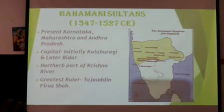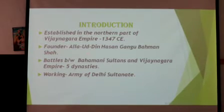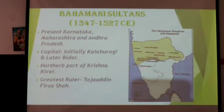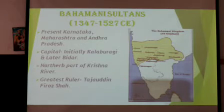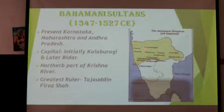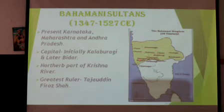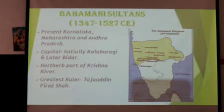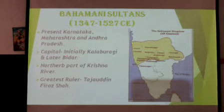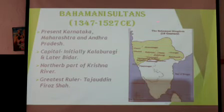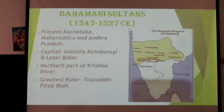As mentioned, the sultanate was established in the northern part of the Vijayanagara Empire. You can see on the map the Vijayanagara Empire, while the Bahamani kingdom belongs to the northern part — the region marked in yellow. During the 15th century, places such as Kalyana, Ahmednagar, Bidar, Kalaburagi, Kundapalli, and Belgavi all belonged to the Bahamani Sultans — covering parts of present-day Karnataka, Maharashtra, and Andhra Pradesh.